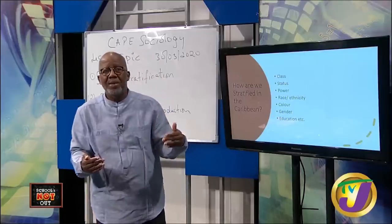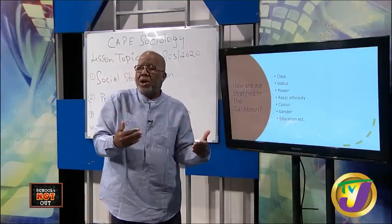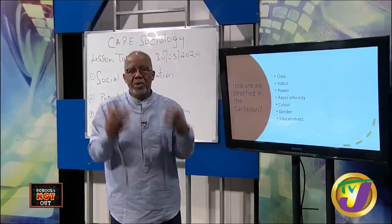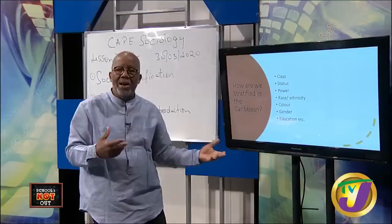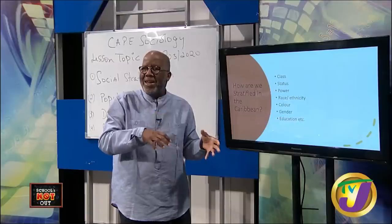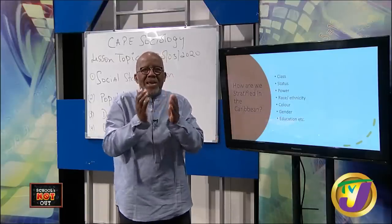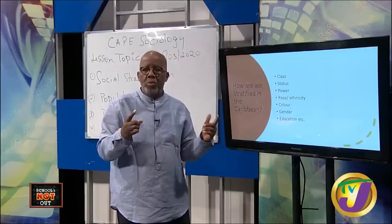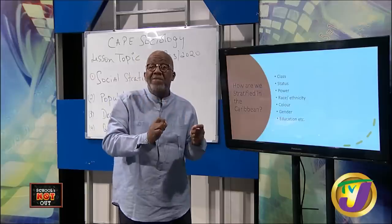It's important to understand these concepts because they are the stuff of which multiple choice questions are made — class, status, power, race, ethnicity. They are not interchangeable. Race has to do with your phenotype — how you look, whether you're black or white. Ethnicity refers to characteristics which the group considers relevant to the individual; you can't simply claim membership in an ethnic group without having those relevant characteristics.